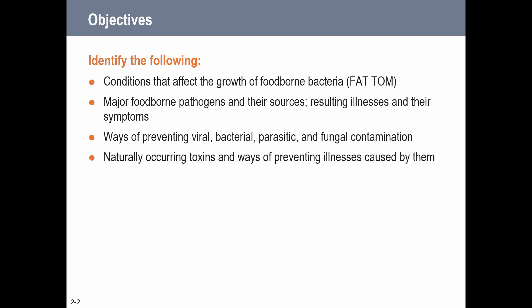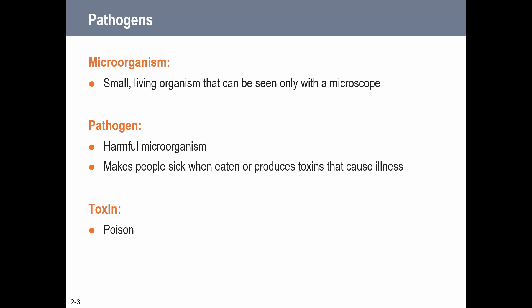We're going to look at the conditions that affect the growth of bacteria and pathogens. We talked in chapter 1 about viruses, bacteria, fungi, and parasites being biological contaminants, and we'll talk in more detail about those - what illnesses they cause, how we can prevent them - and we'll even look at toxins, like plant toxins and other things. Let's start with looking at what a microorganism is.